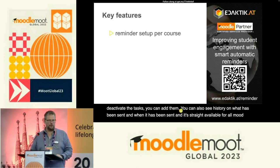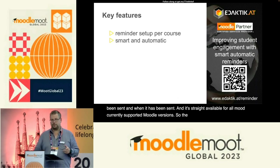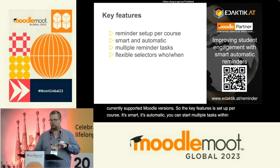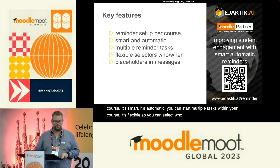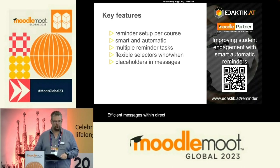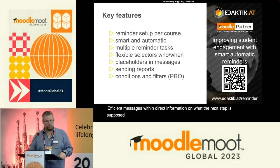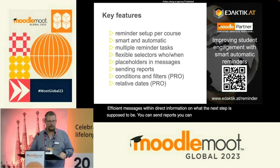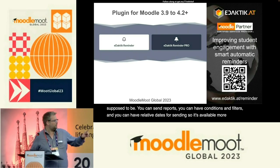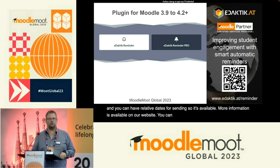The key features: it is set up per course. It's smart and automatic. You can set multiple tasks within your course. It's flexible — you can select who to send to and when to send. There are placeholders to create efficient messages with direct information on what the next step is supposed to be. You can send reports, set conditions and filters, and use relative dates for sending. More information is available on our website — just click the QR code to get all the information.